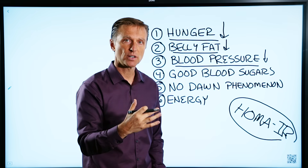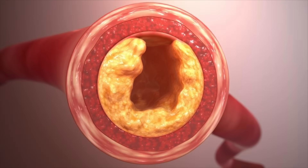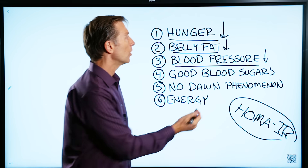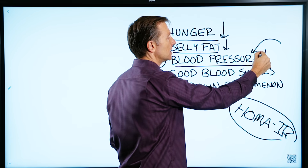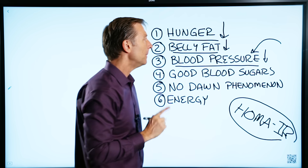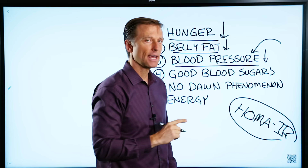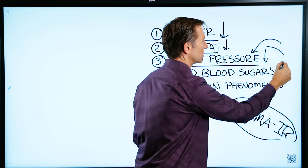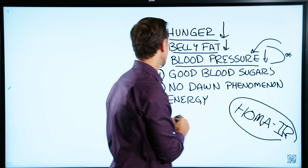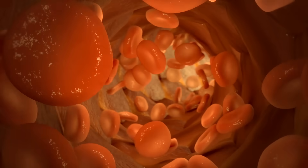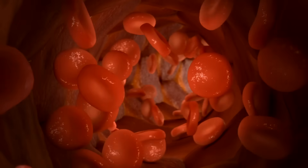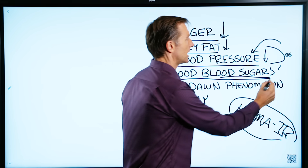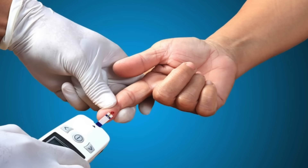When you have high insulin or high sugars, the arteries get really, really stiff. And when you do healthy keto and intermittent fasting — I would also recommend more vitamin D with this — you can improve blood pressure, but sometimes it takes up to a year to get this under control. Number four: good blood sugars. For most people you're going to see change immediately, but if you've been a type 2 diabetic for many, many years, it could take up to a year to really get blood sugar under control.